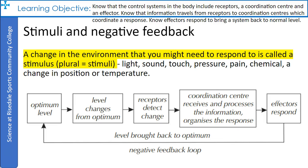The effectors respond to counteract the change and bring the level back to its optimum. The mechanism that restores the optimum level is called a negative feedback mechanism. The effectors will carry on producing the response for as long as they're stimulated by the coordination center. This might cause the opposite problem, making the level change too much away from the ideal. Luckily, receptors detect if the level becomes too different and negative feedback starts again, so the level is kept at its optimum.